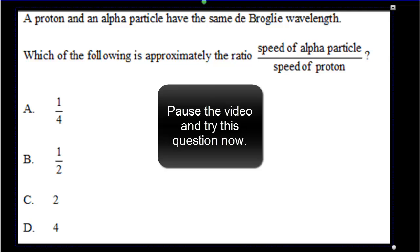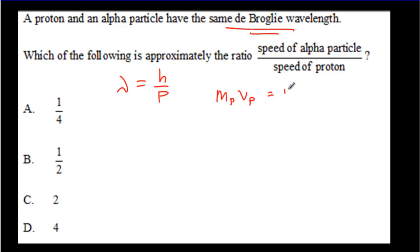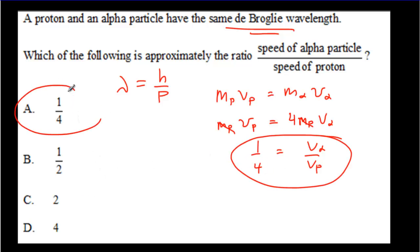Another IB question: if a proton and an alpha particle have the same de Broglie wavelength, since lambda equals h over p and h is constant, their momenta must be the same. So mass of proton times speed of proton equals mass of alpha particle times speed of alpha particle. An alpha particle has two protons and two neutrons — four nucleons — so four times the mass of a proton. Therefore the speed of the alpha particle divided by the speed of the proton equals one-quarter, giving answer A.